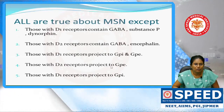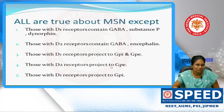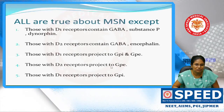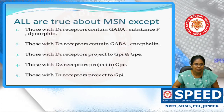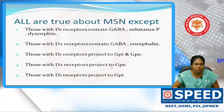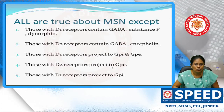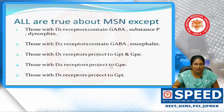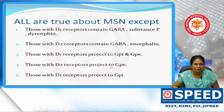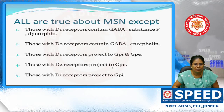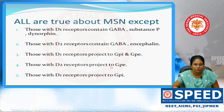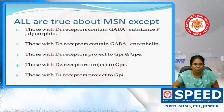Next question: what is true about medium spiny neurons present in the striatum? Those with D1 receptors contain GABA, substance P, and dynorphin. Those with D2 receptors contain GABA and enkephalin. Those with D1 receptors project to GPi and GPe. Those with D2 receptors project to GPe. Those with D1 receptors project to GPi.